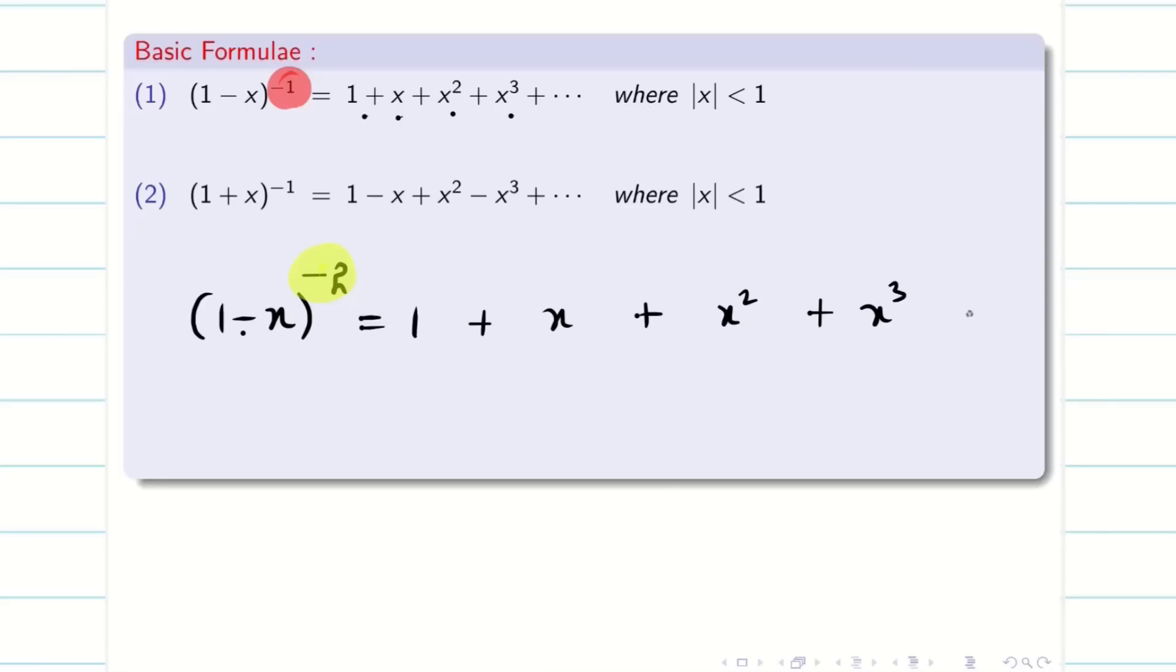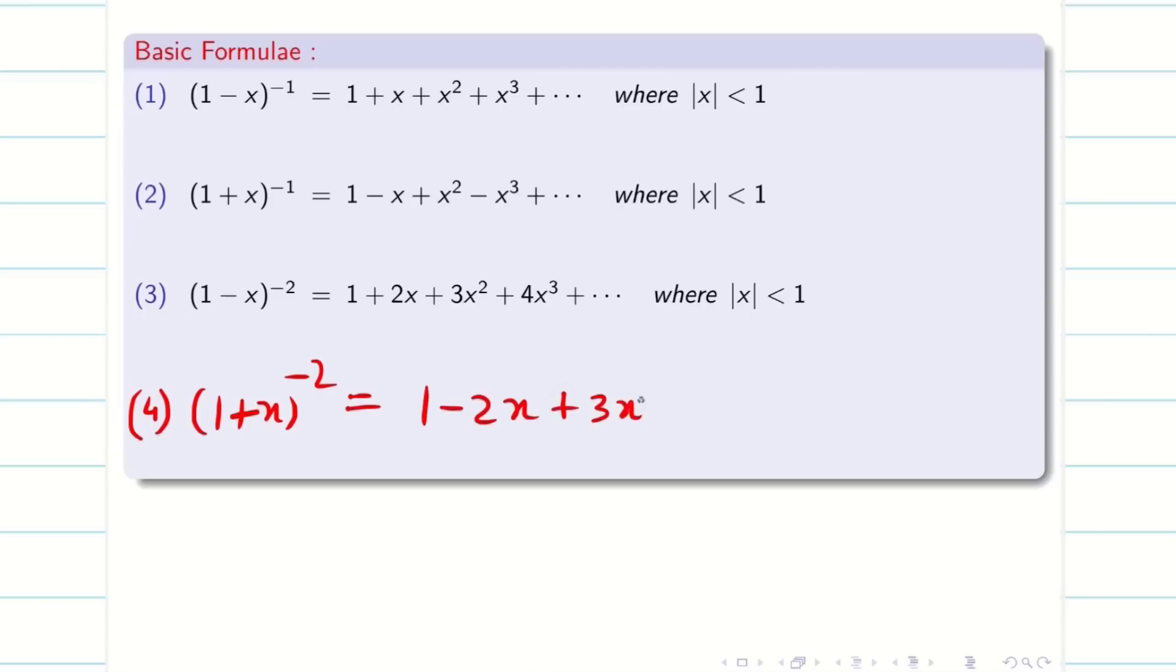We already wrote this 1 plus x plus x square etc. Just put like 1, 2, 3, 4. It is very easy to remember the formula. Now, the next formula you would have guessed: 1 plus x whole power minus 2 is going to be 1 minus 2x plus 3x square minus 4x cube etc. So these are all the preliminaries which we need for this type. Okay, let us go into the problem.